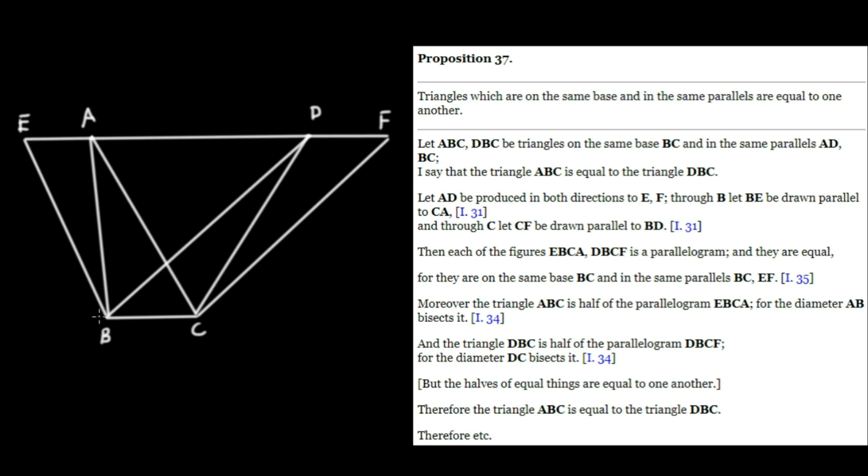Therefore, EBCA and DBCF are both parallelograms. And they must be equal, and he gives his reasoning: they are on the same base, namely BC, and in the same parallels, BC and EF, which is this one over here, which follows from Proposition 35.